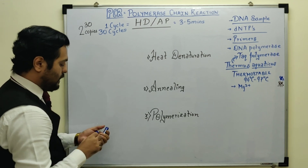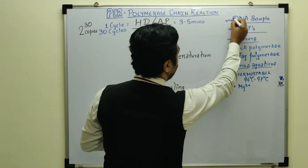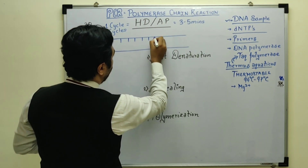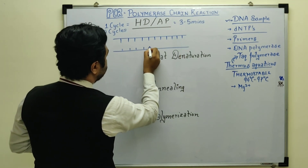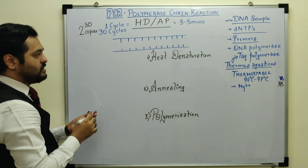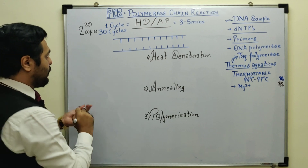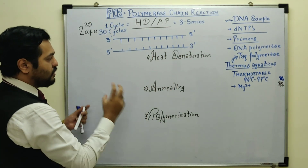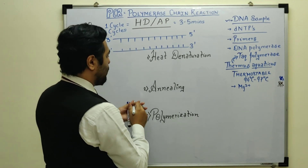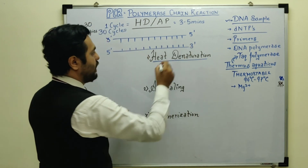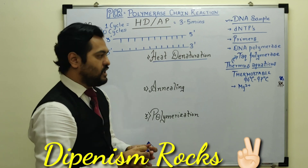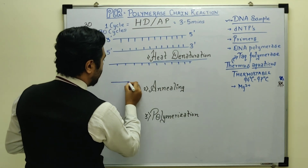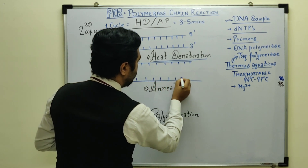Suppose we have a DNA sample — it could be from a crime scene or from a donor cell that has the desired gene. That DNA has two anti-parallel strands: one running 3' to 5' and the other from 5' to 3'. In the first step, we apply heat to this double-stranded DNA. Because of the heat, the hydrogen bonds between the nitrogen bases break — that is known as denaturation of the DNA. The double-stranded DNA separates and we get two separate single-stranded DNA molecules.